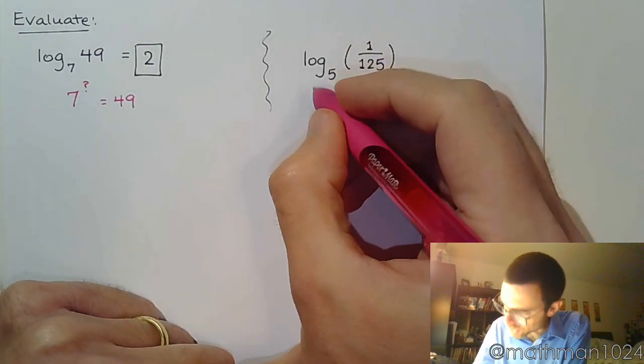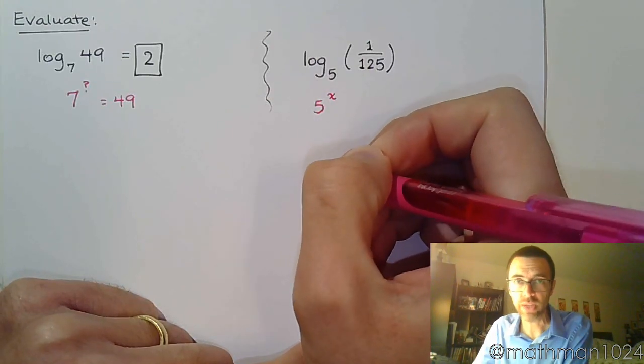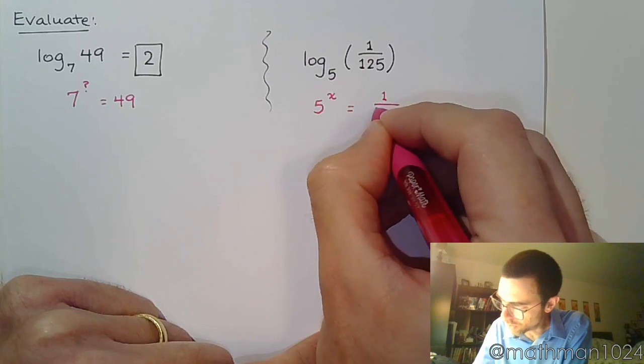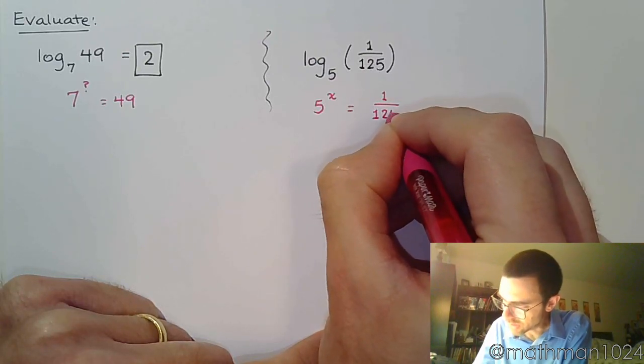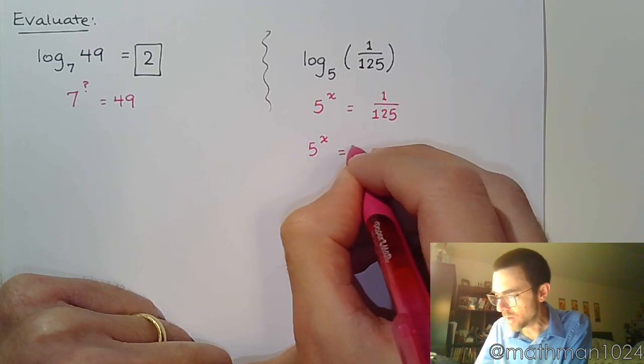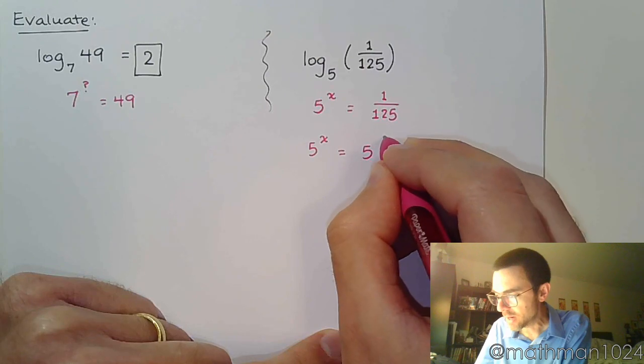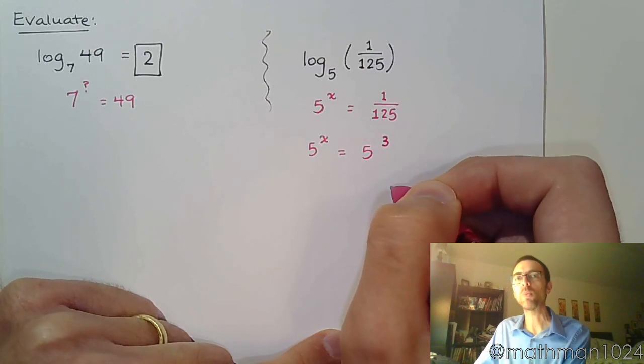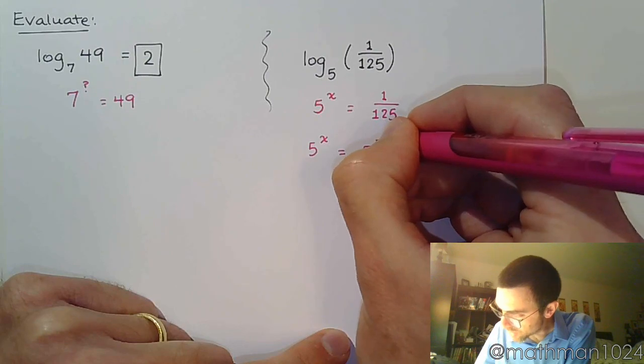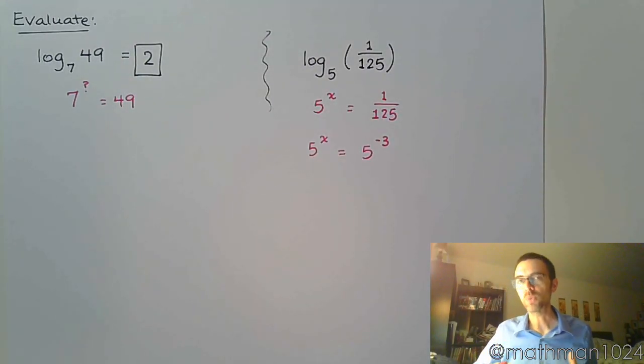Now, if we think about this, we're trying to answer the question that 5 raised to a power, let's call that x, is equal to 1 over 125. Now in a previous video, we talked about how we can rewrite this. 125 would be 5 to the 3rd, right? But since that 125 was in the denominator, that means it's going to be negative 3. So 5 to the 3rd is 125. 5 to the negative 3rd is 1 over 125.